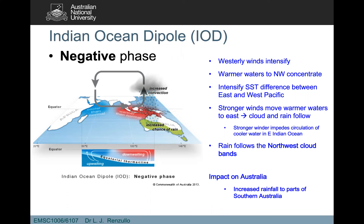We have an intensified westerly wind pattern in the region bringing warmer waters to the northwest coast. The intensified temperature difference between the east and west Indian Ocean means stronger winds can move more waters to the east, which leads to more cloud and therefore more rain. The increased chance of rain across Australia follows the northwest cloud band, with the general impact being increased rain across southern parts of Australia during the negative phase.